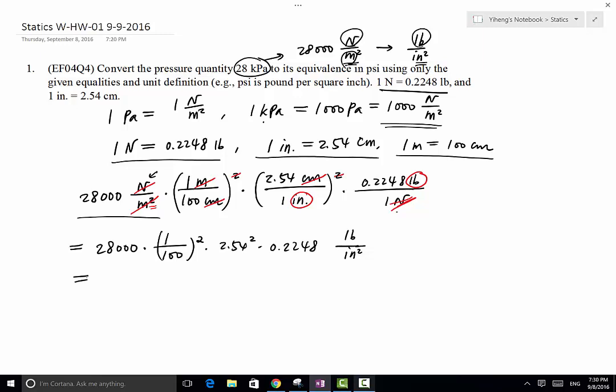So after we do the calculation and keep three significant figures, this is going to be 4.06 pound per inch squared. And by definition, pound per inch squared is psi. So this is the final answer.